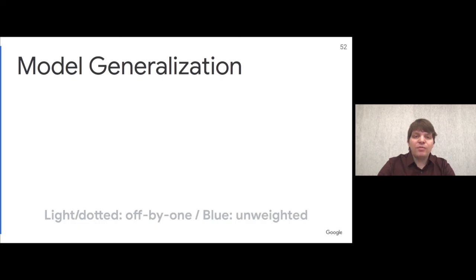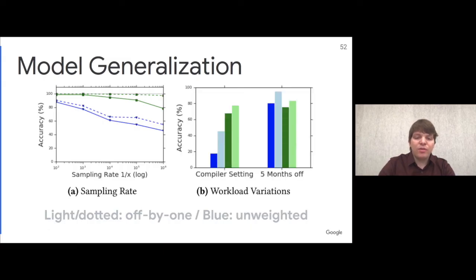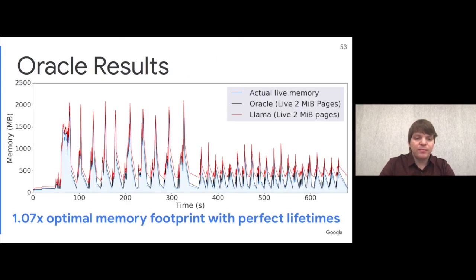We also evaluated the performance of our model and showed that it can generalize to stack traces not in the training set, and can generalize both across different compiler settings and across revisions of a workload several months apart. Finally, we wanted to understand how well our memory allocator works independently of the model's performance. Lama achieves less than 10% fragmentation when given perfect lifetimes by a lifetime oracle, entirely with huge pages. So Lama does a very good job at packing memory into huge pages.